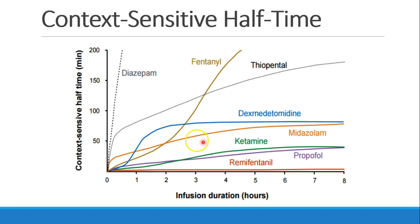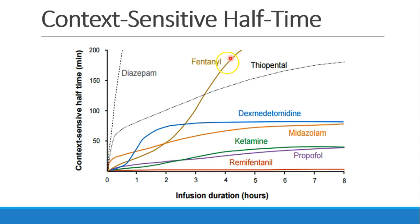Let's examine this and look at a few different drugs. Here we see fentanyl. If I run a fentanyl infusion for one hour, it will take about 20 to 30 minutes for fentanyl levels in the plasma to drop by 50%. If I run the infusion for two hours, it'll take about 50 minutes for levels to drop. And if I run it for five hours, it's going to take 200 minutes — more than three hours — for fentanyl levels to drop by 50% in the plasma. This is probably due to fentanyl's lipid solubility and building up in fatty tissues.